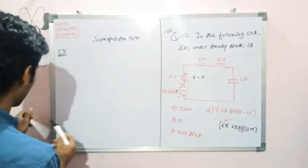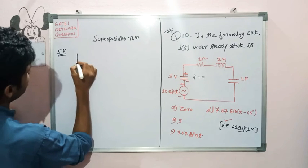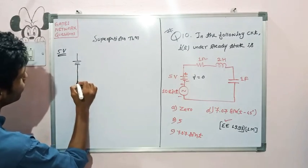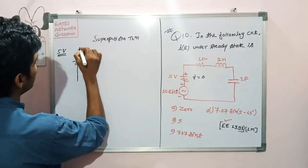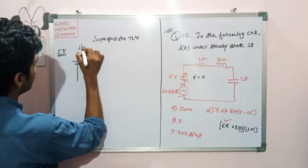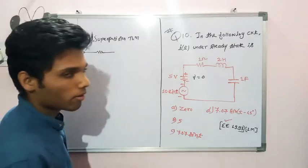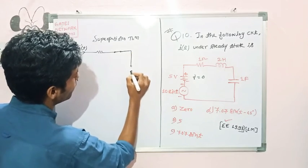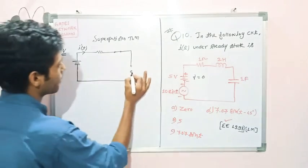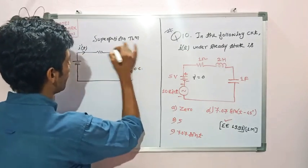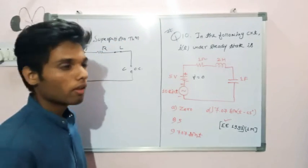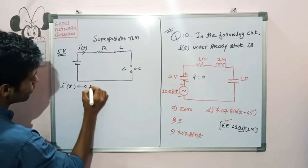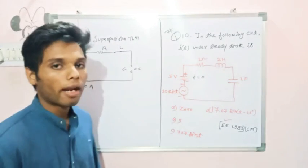For the 5-volt source only, at steady state condition the circuit reduces as follows: the 10sinT voltage source is short-circuited. The current will be I'(T). At steady state, inductors act as short circuits and capacitors act as open circuits. Therefore, current due to the 5-volt source, I'(T), equals 0, because the capacitor acts as an open circuit.